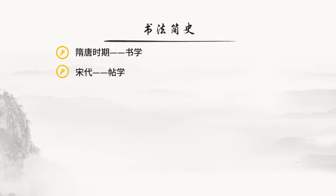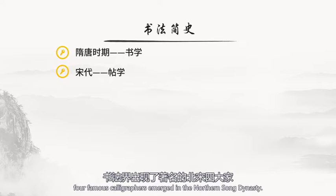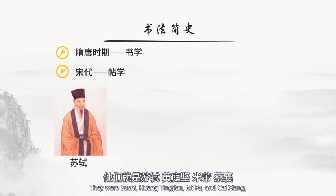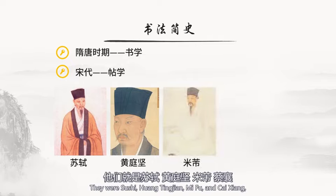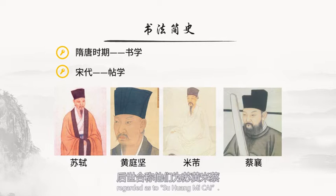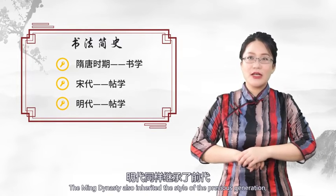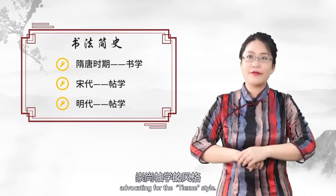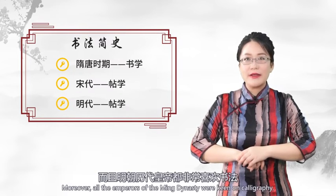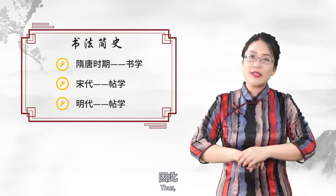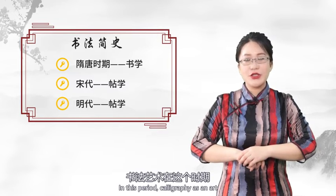这一时期的书法大家有颜真卿、柳公权、张旭、怀素等，特别是张旭和怀素的草书对后世影响深远。书法发展到了宋代，出现了帖学，主要是翻刻有名的字帖，然后进行模仿创作。这一时期书法界出现了著名的北宋四大家：苏轼、黄庭坚、米芾和蔡襄，后世合称他们为苏、黄、米、蔡。